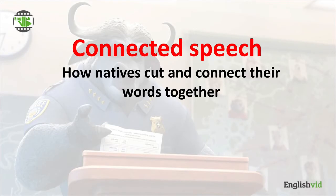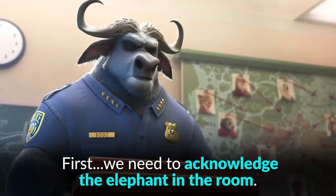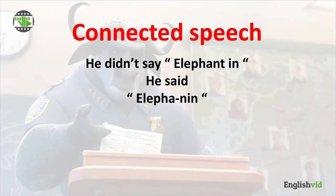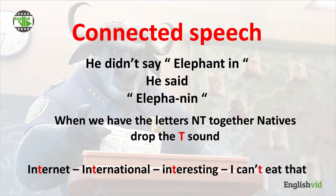Now let's talk about connected speech — how natives cut and connect their words together. Listen to how he says it: "We need to acknowledge the elephant in the room." He didn't say "elephant in" separately — he said "elephantin." When we have the letters N-T together, natives drop the T sound. For example: "internet," "international," "interesting," "I can't eat that" — we drop the T. That's a very important part of pronunciation.